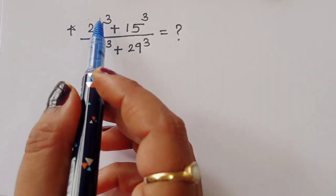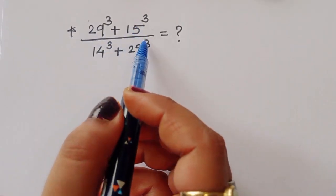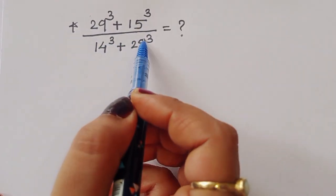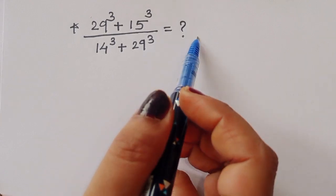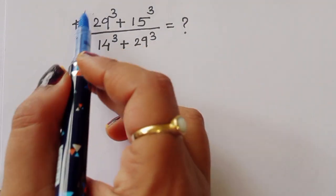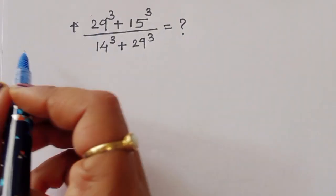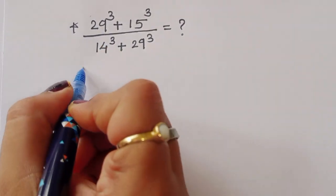The question is: given (29³ + 15³) divided by (14³ + 29³), what is the value of this expression? We have to find out the value of this term. Let's see the solution.